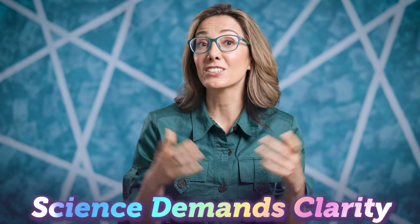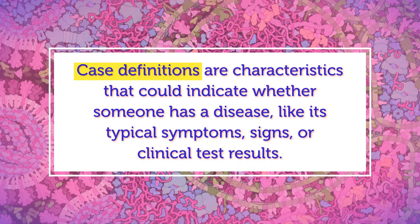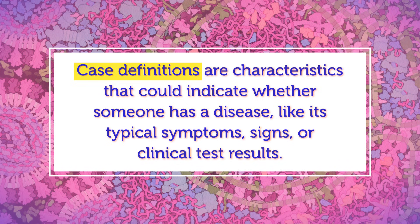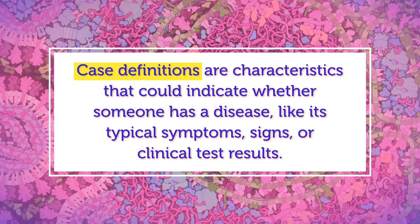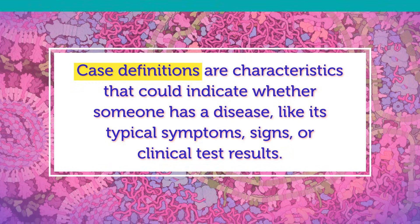As we saw when we talked about clinical diagnostics, determining whether someone is a case or not is tricky. So cases need their own definitions. As always, science demands clarity. Case definitions are characteristics that could indicate whether someone has a disease, like its typical symptoms, signs, or clinical test results. For new diseases, case definitions tend to start out broad and exploratory, and then become more specific as we learn more about them.